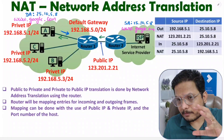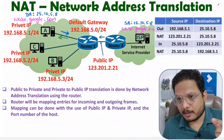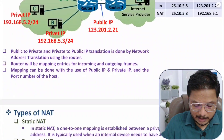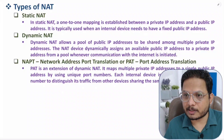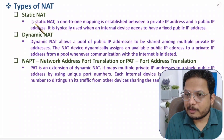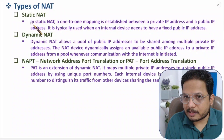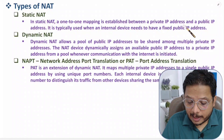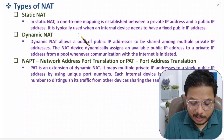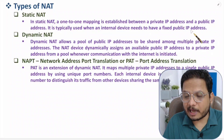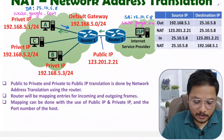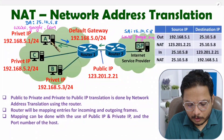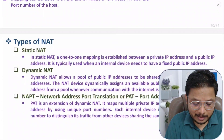There are three categories of Network Address Translation. The first is Static NAT — in static NAT a one-to-one mapping is established between private and public IP addresses. It is typically used when an internal device needs to have a fixed public IP address. Here only one-to-one translation happens.